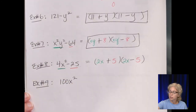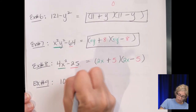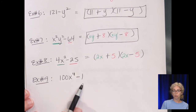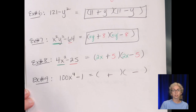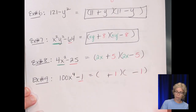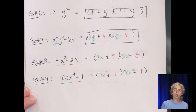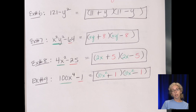Example 9: 100x⁴ - 1. We don't pull out a GCF of just 1, and there's no variable in common. Set up two parentheses with different signs. For 1, it's 1×1. For 100x⁴: 10×10=100 and x²×x²=x⁴. So the answer is (10x² + 1)(10x² - 1). Today we covered greatest common factoring and difference of two perfect squares factoring.